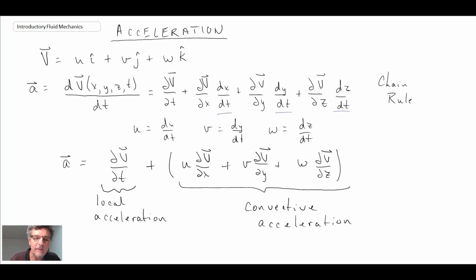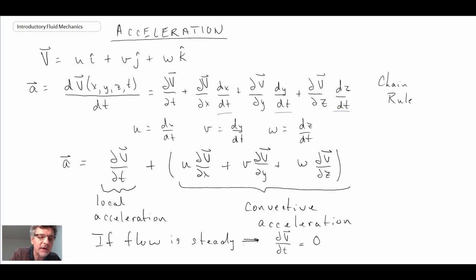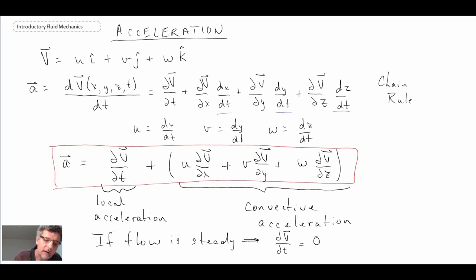Now, it turns out that if the flow is steady, that means it is not changing with respect to time. Consequently, in that case, we can write dV/dt equal to zero. So the first term, the local acceleration term, would disappear if we were dealing with a steady flow. So we're going to take a look at rearranging this expression for the acceleration of a fluid.